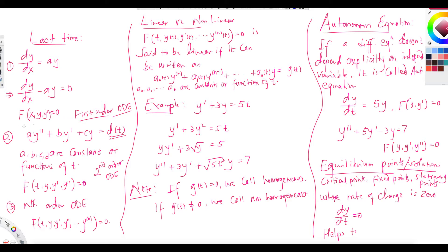This is the general first order ODE and this is the second order ODE. If you want to write down the nth order ODE, this is the general method: F(T, Y, Y', Y'', ..., Y^(n)) = 0. There may be constants used, but you don't need to write them explicitly — this is how we generally write it.